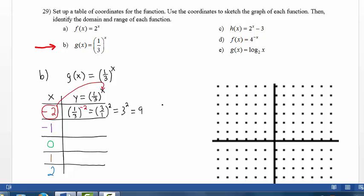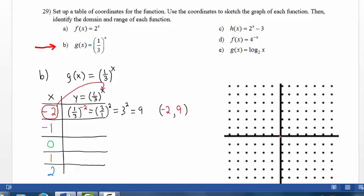So the point that we should plot is negative 2 comma 9. From the origin, we count 2 to the left and up 9: 1, 2, 3, 4, 5, 6, 7, 8, 9.